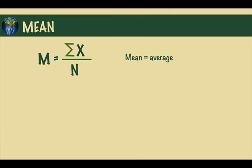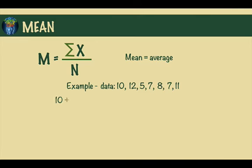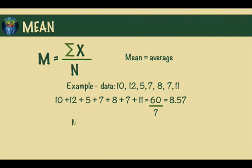Let's look at an example. Here we have a small data set with seven values. The first step is to add up these values, then we divide them by the number of scores, in this case 7, and this gives us a value of 8.57, which is the mean for this data set.